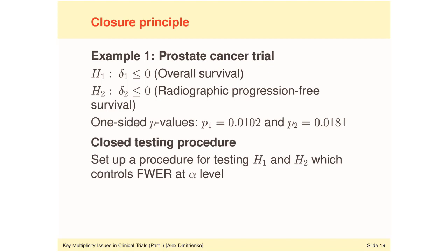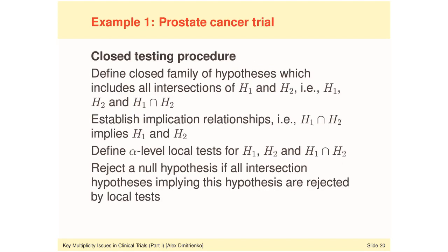Our goal is to build a multiple testing procedure for examining the two null hypotheses H1 and H2 as a closed testing procedure that controls the family-wise error rate at a one-sided alpha of 0.025. I will walk you through the process of constructing a closed testing procedure for this multiplicity problem. I note that this is a general recipe that can be used to build multiple procedures, and while the algorithm may look complicated at first glance, most closed testing procedures have a simpler, attractive stepwise form.